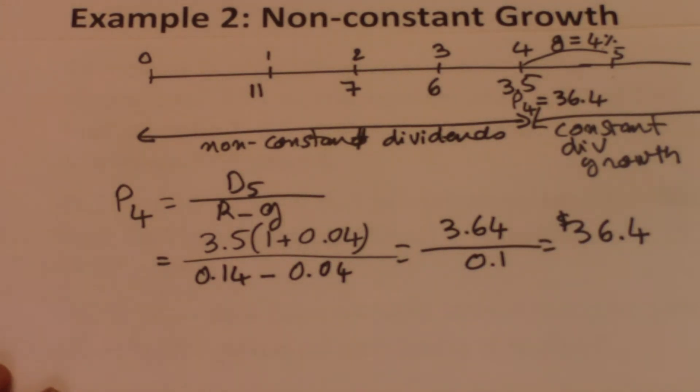That $36.4 reflects the present value of all dividends expected to be received after year 4 at the end of year 4.